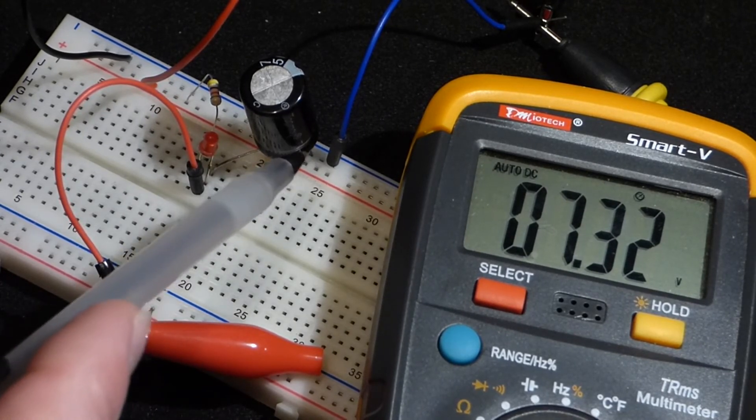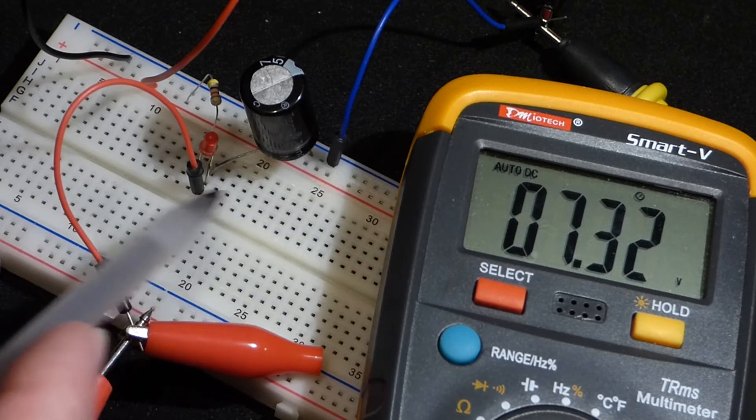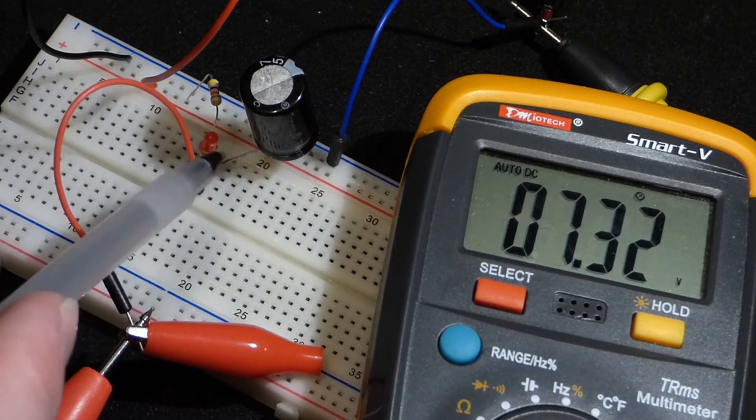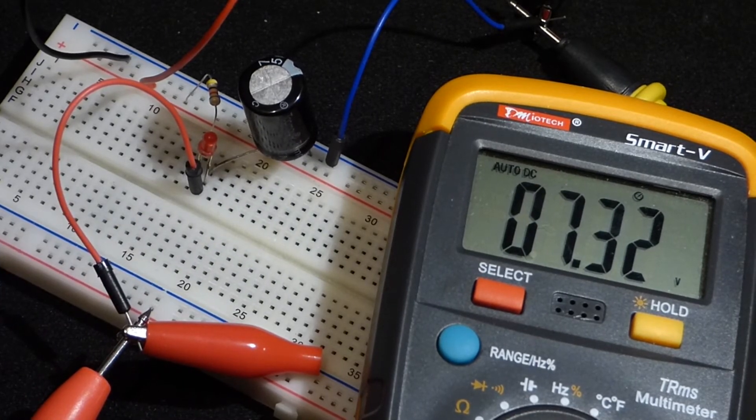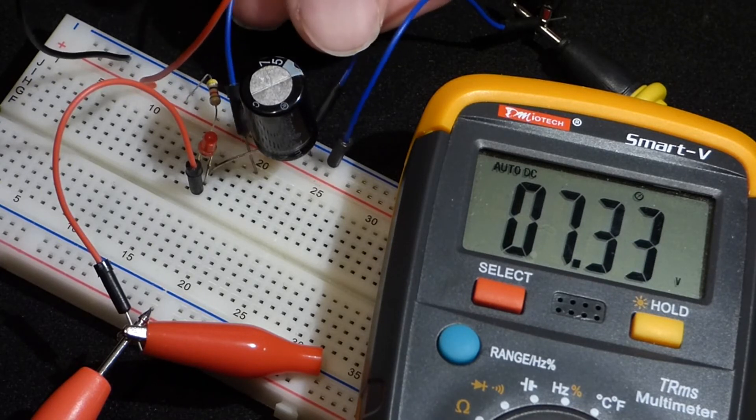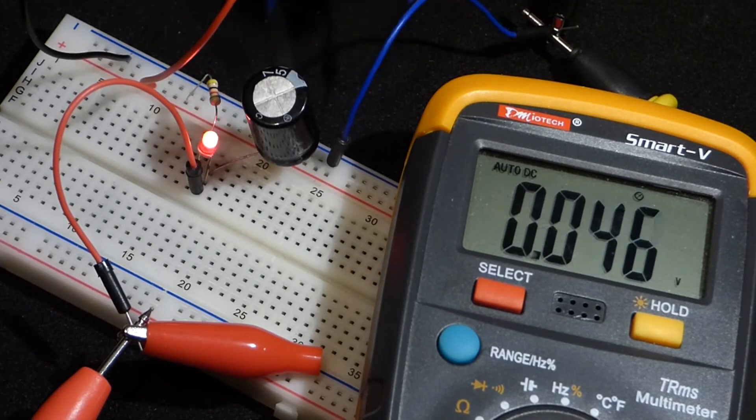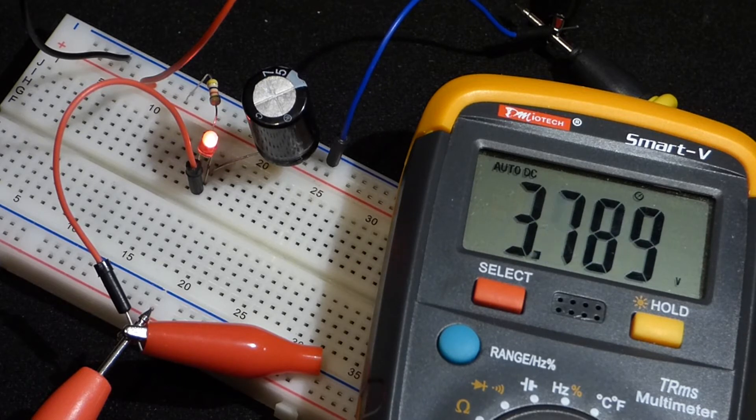They're attached to both sides of the capacitor and then one end of the LED. First, let's discharge the capacitor by shorting it out. Now you can see we get down to zero volts. When I stop shorting it out, you see the voltage rises.